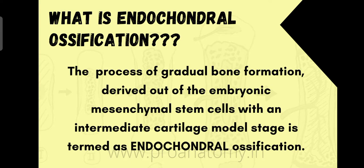What is endochondral ossification? The process of gradual bone formation derived out of the embryonic mesenchymal stem cells with an intermediate cartilaginous model is termed as endochondral ossification. As the name suggests, 'chondral' refers to cartilage — chondrocytes and chondroblasts are nothing but cartilage cells. There will be an intermediate cartilage model stage, and that's what makes it different from membranous ossification. A model formed out of cartilage will later get replaced by bone cells, finally forming a complete bone.